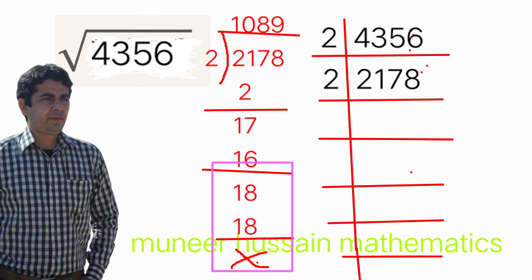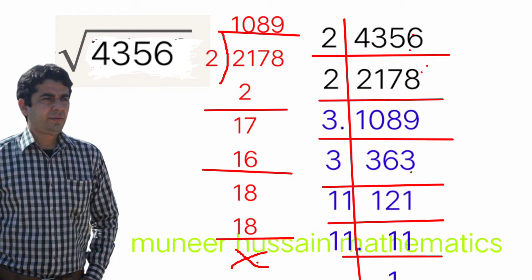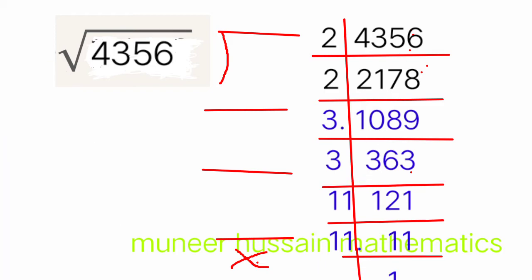So we get 1089. Now we shall divide by 3: 3 into 10 is 3 remainder 1, 3 into 18 is 6, 3 into 9 is 3 — giving 363. Dividing again by 3: 3 into 3 is 1, 3 into 6 is 2, 3 into 3 is 1 — giving 121. And 121 is a prime square number; it is the square of prime number 11, since 11 × 11 = 121.